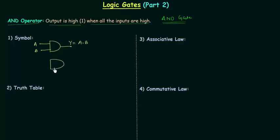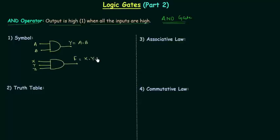Now we will make a three-input AND gate. Let's say the three inputs are X, Y and Z, and the output is equal to F. So F is equal to X AND Y AND Z. So this is the symbol for AND gate.